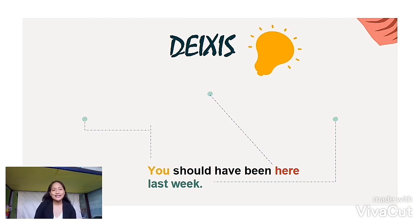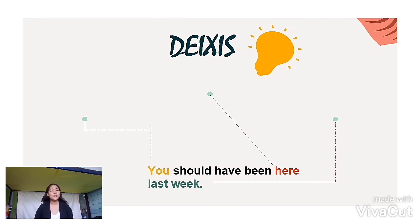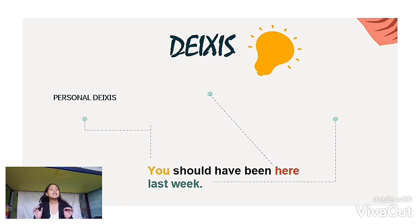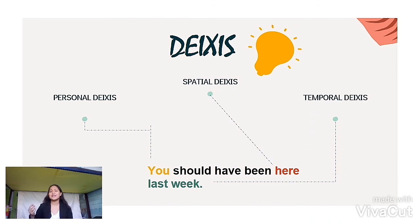At this point, let us identify the diactic element in this sentence: You should have been here last week. You is the personal diaccess, of course. And here is the spatial diaccess, and last week is the temporal diaccess. So where is the discourse diaccess? Remember, I said at this point — that is the discourse diaccess.